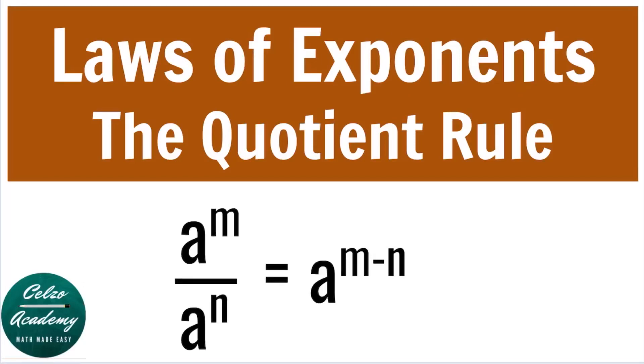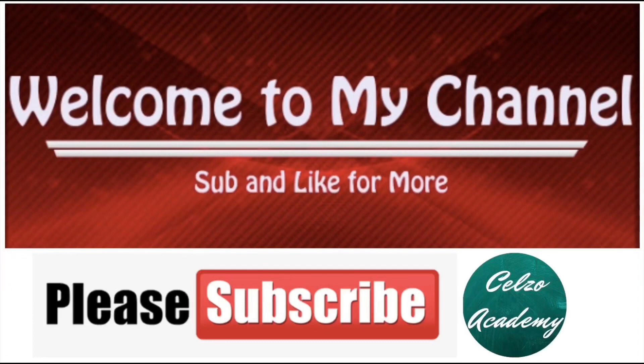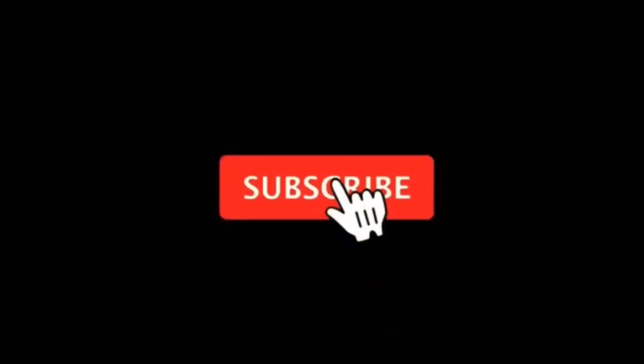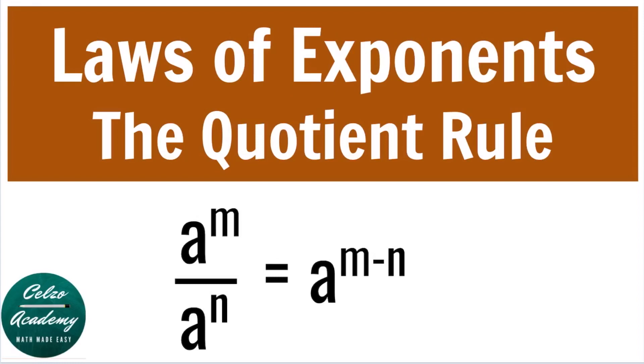Today, we're learning the third law of exponents, called the quotient rule. The quotient rule states that if you divide a to the power of m, divided by a to the power of n, the answer is a to the power of m minus n, which means you keep the same base a and subtract the powers m and n.